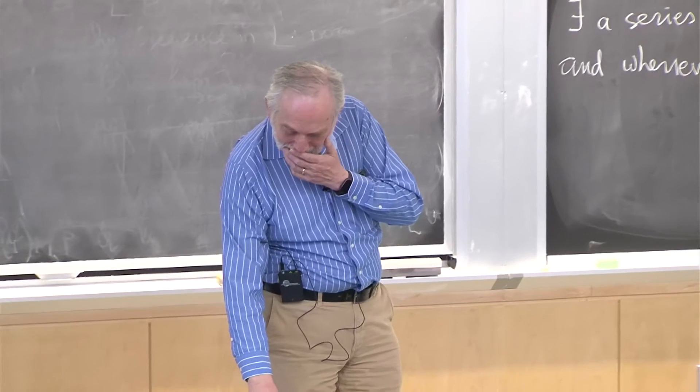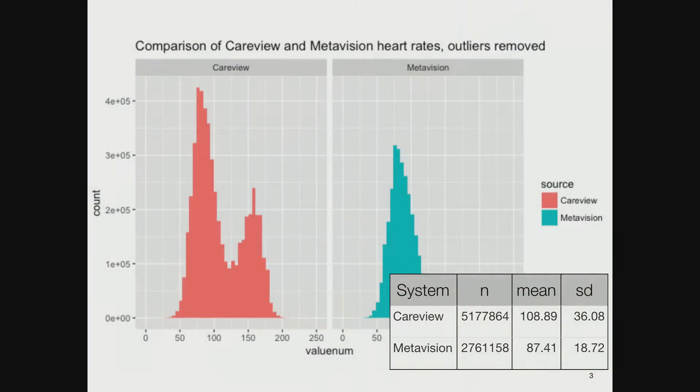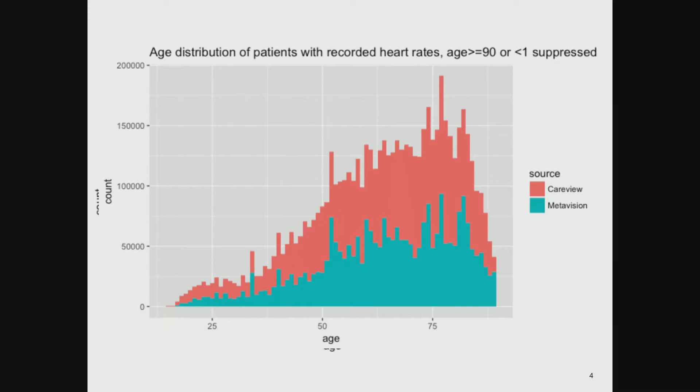If you look at the statistics, the mean heart rate in CareView is 108 and in MetaVision is 87. But means aren't meaningful with bimodal distributions. If we look at adults, people from age greater than 1 up to 90, the distributions look pretty similar.